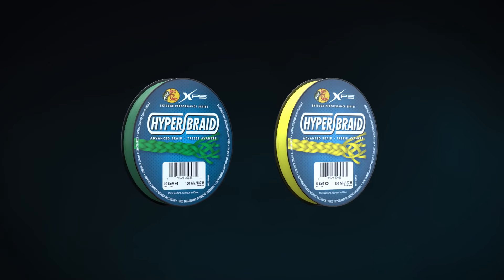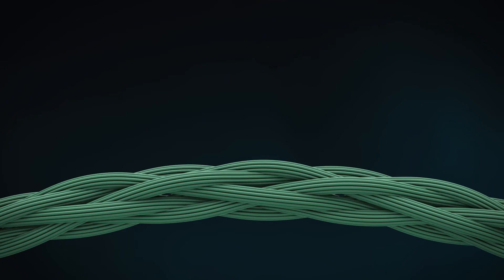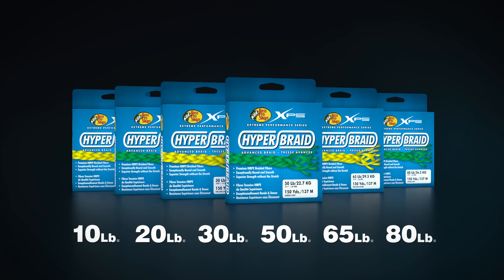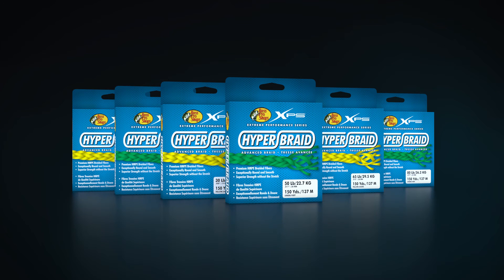HyperBraid is available in green or yellow and has enhanced color protection, meaning the line will stay true to its color longer. There are six weights available to match any fishing condition you may face, and spools are available in 150 or 300-yard lengths.